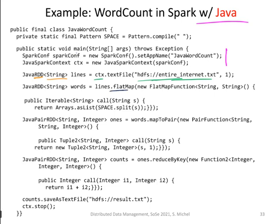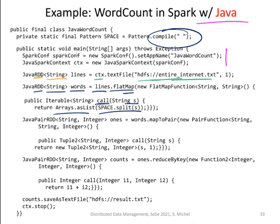Now we are applying a function called flatMap, which is a map followed by a flattening operation. We apply a map on this lines RDD and get an RDD called 'words', which is of type String. To get the words out of the lines, we apply tokenization for every string representing a line. We define a function called 'call' for the map operation, which takes the string as input and returns a list by splitting the string by space. This gives us an RDD with words.